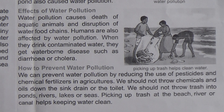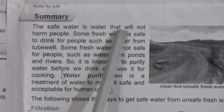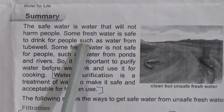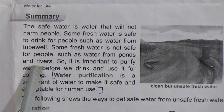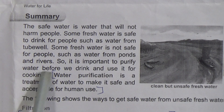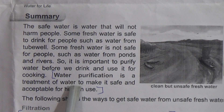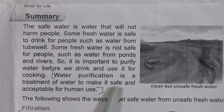Now, the next topic: safe water. Safe water is necessary not only for plants and animals but also for people to stay healthy. Safe water is water that will not harm people. Some fresh water is safe to drink, such as water from a tube well. Some fresh water is not safe, such as water from ponds and rivers. So it is important to purify water before we drink it or use it for cooking. What is water purification? Water purification is the treatment of water to make it safe and acceptable for human use.